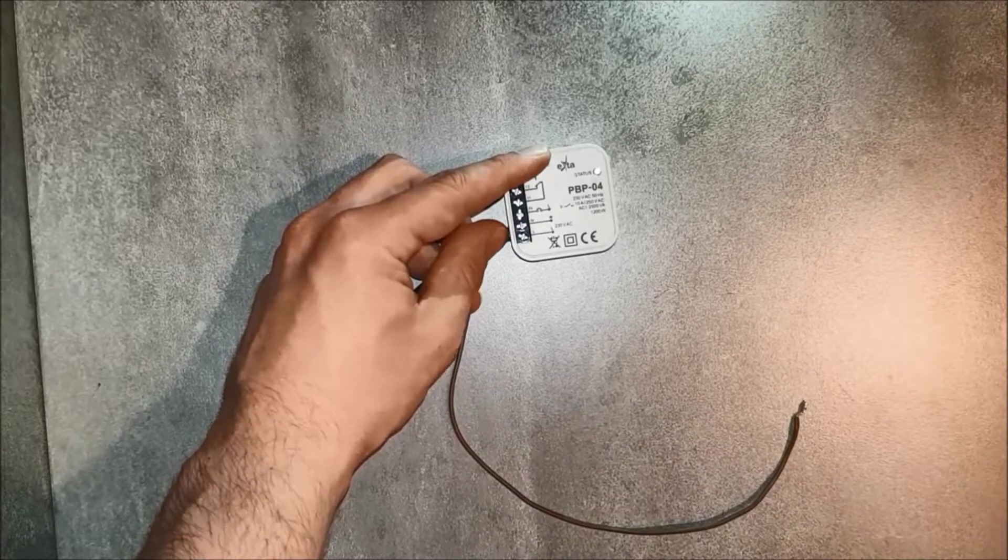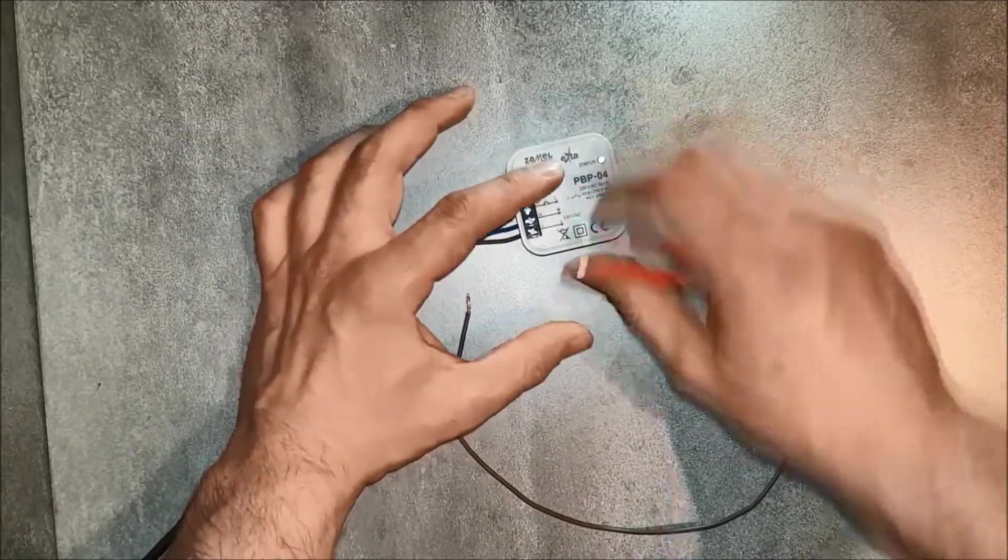With an additional wire, make a bridge between the phase terminal L and the relay terminal 11.